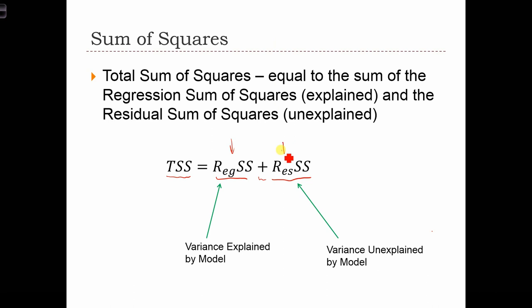Obviously, if more of the variance is being explained by the model, then our regression model is doing a better job. If more of the variance is unexplained by our model, then maybe our model isn't a good-fitting model.